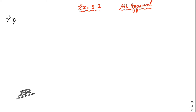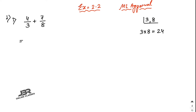Sum number one: evaluate the following — 4/3 plus 7/8. That means you have to add these two fractions. To add them, first find the LCM of the denominators. Here 3 and 8 have no common factor, so the LCM equals just the product of these two numbers, which is 24.